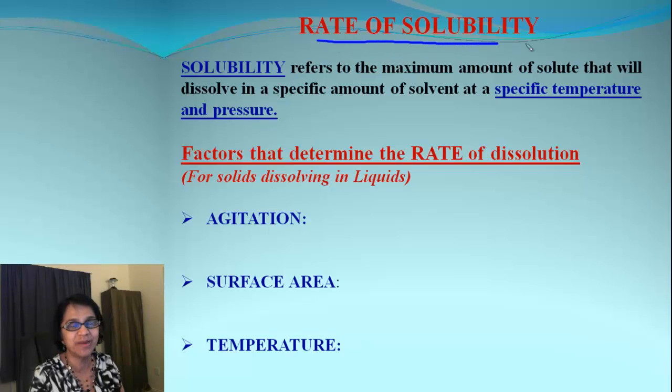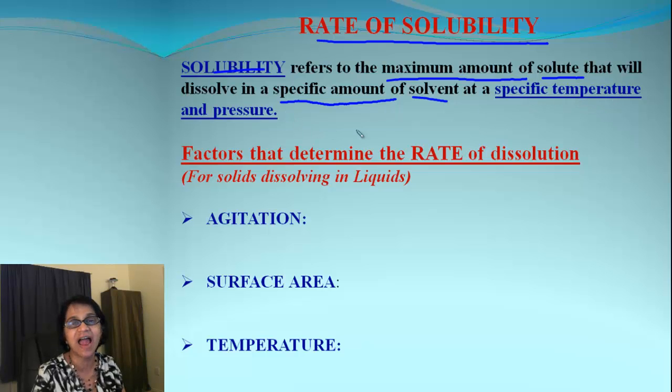What do we have first? It is rate of solubility. Solubility means the maximum amount of solute that will dissolve in a specific amount of solvent at a specific temperature and pressure. The values of solubility will be different if we change the temperature or pressure. So let's find out which factors will decide the rate of dissolving a solid into liquid.